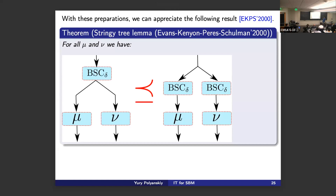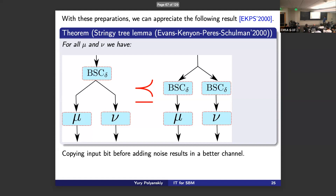Here is a famous result from around 2000: the stringent tree lemma. If you have any pair of channels μ and ν, and you first flip the bit then copy and pass through the channels, this is always worse than first copying the bit, then flipping twice and passing through. This sounds completely obvious — here you degrade the bit right away, but there you give it two chances to pass. The key point is that this holds only for binary channels; it doesn't hold beyond binary.